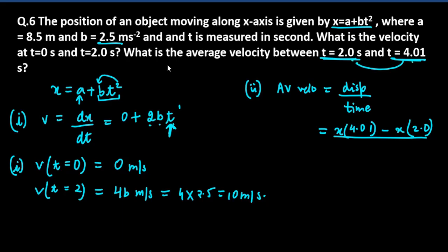Displacement is basically what? The time interval is 4.01 minus 2, which is 2.01. Now we have to solve this to get the average velocity.